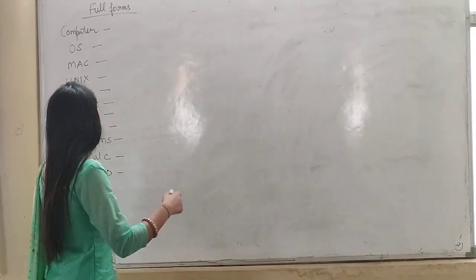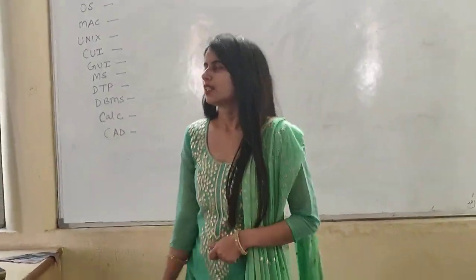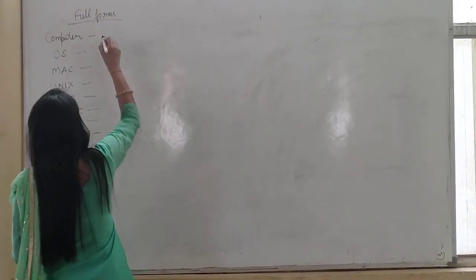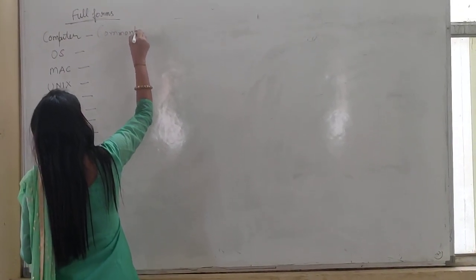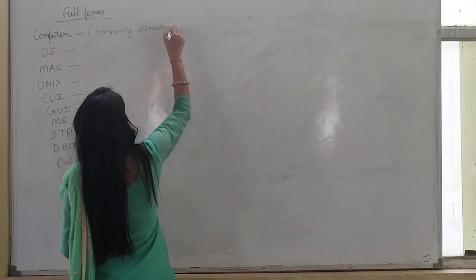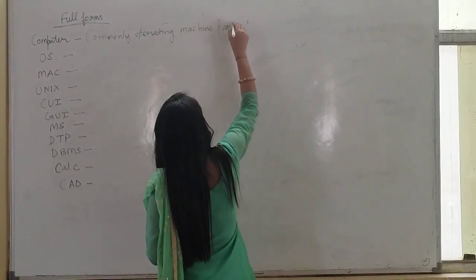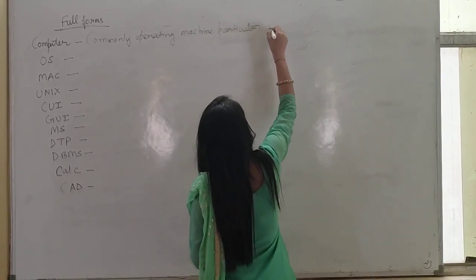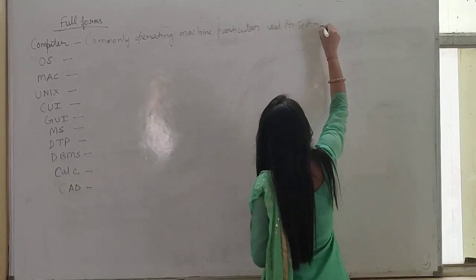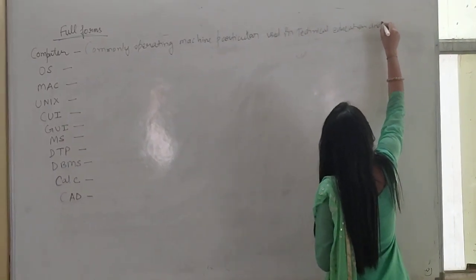Today we should study the full forms that are related to the chapters that we have studied. The first one is COMPUTER. We should know its full form, and the full form is Commonly Operating Machine Particularly Used in Technical Education and Research.